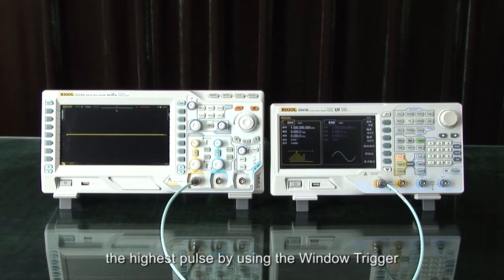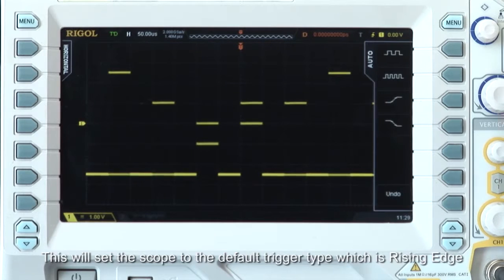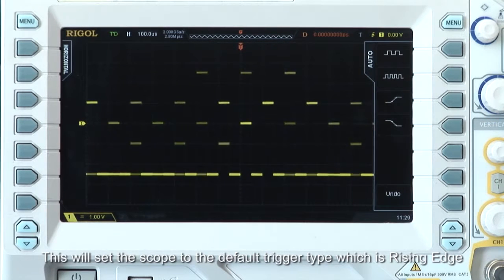Let's have a look at how to trigger the highest pulse by using the window trigger. Let's start by pressing the auto button. This will set the scope to the default trigger type, which is rising edge.